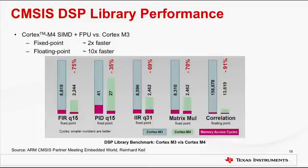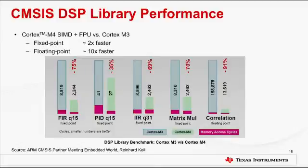The diagram on screen shows a quick comparison of CMSIS DSP library performance on Cortex-M4 and M3 platforms for different operations. For example, using the DSP library on Cortex-M4 with fixed-point consumes 70% less CPU cycles compared to Cortex-M3 for matrix multiplication. Using the DSP library on Cortex-M4 with floating-point consumes 91% less CPU clock cycles compared to Cortex-M3 for correlation operations. The CMSIS DSP library also contains several examples and can be downloaded from ARM's website with documentation included.